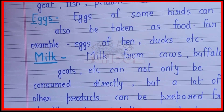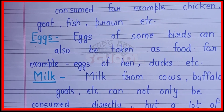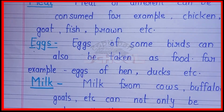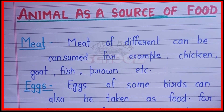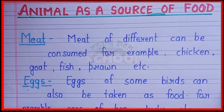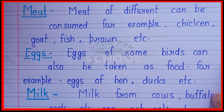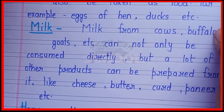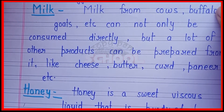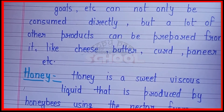Animals as a source of food: meat, eggs, milk, and honey.